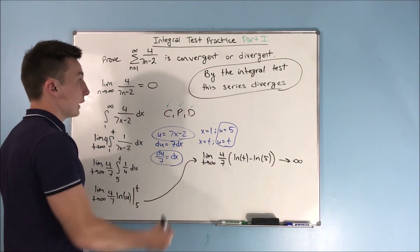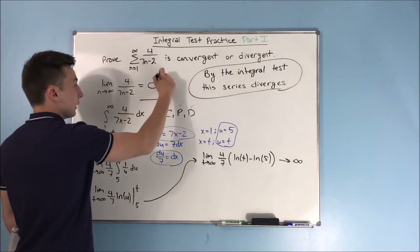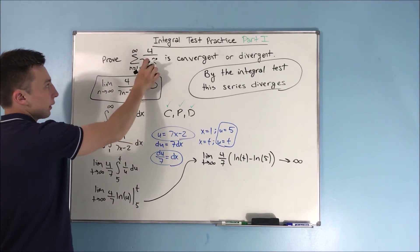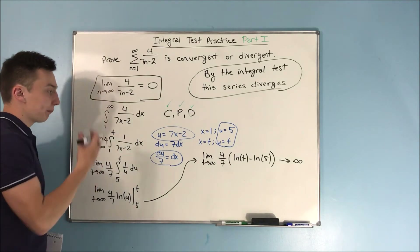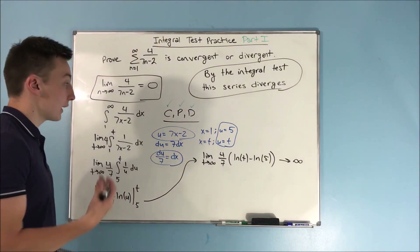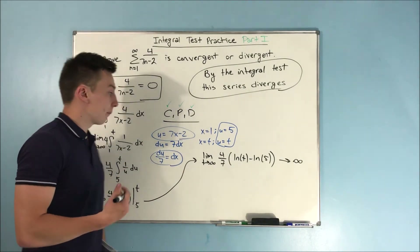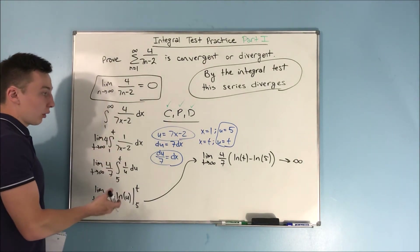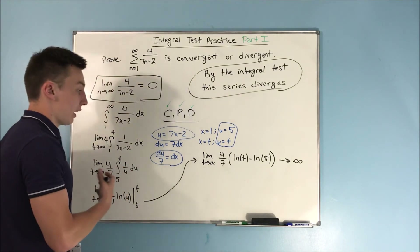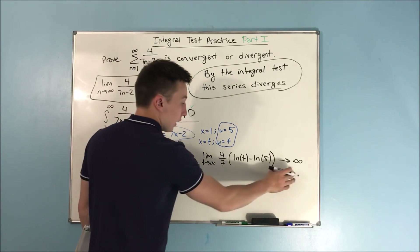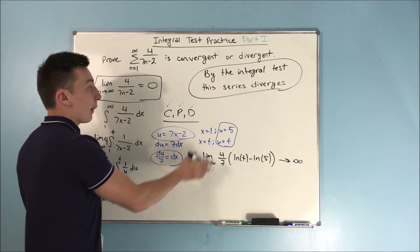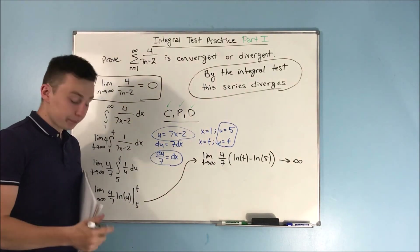To summarize: we always start with the test for divergence, then try to use the integral test. We plug x into the function and take the integral from one to infinity, first verifying that the function is continuous, positive, and decreasing — that's a required condition of the integral test. We then evaluate the improper integral. If the integral diverges, the series diverges; if it converges, the series converges.